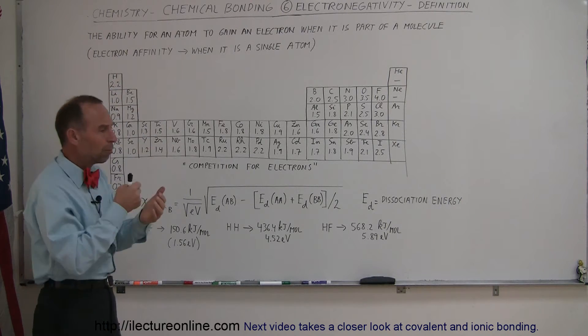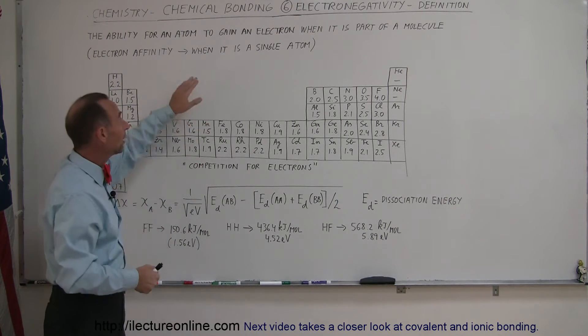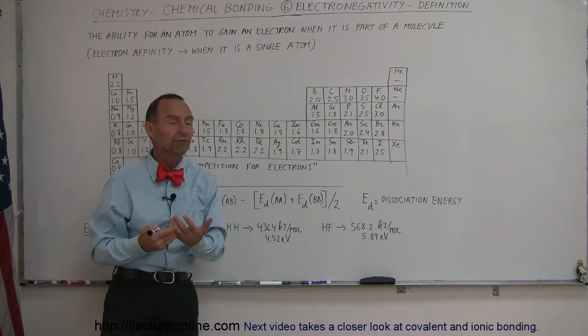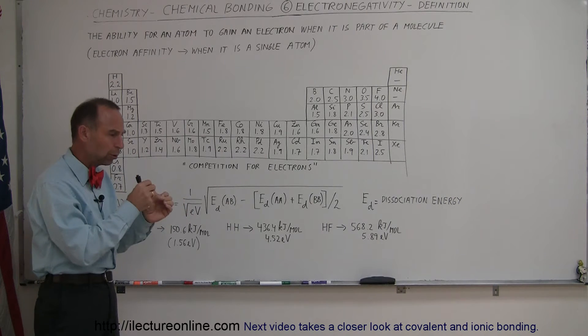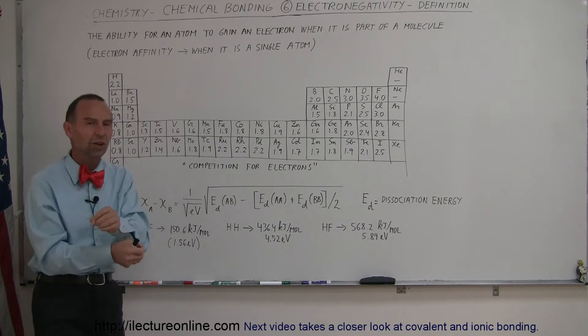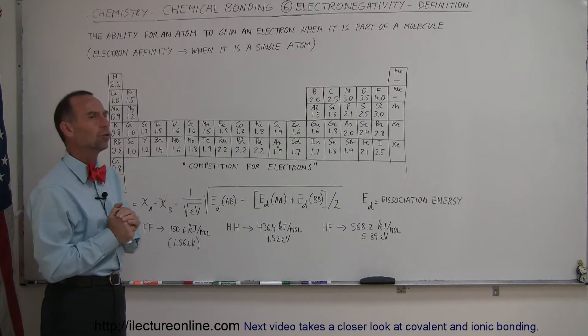we can easily do a chemistry test to figure out what we call electron affinity. So the electron affinity is the pull to an electron when it's a single atom, and that's easier to figure out. But when it's part of a molecule, it's hard to figure out, because we have to be able to attribute the pull to one atom versus another atom within a molecule, and that's not easy to do.